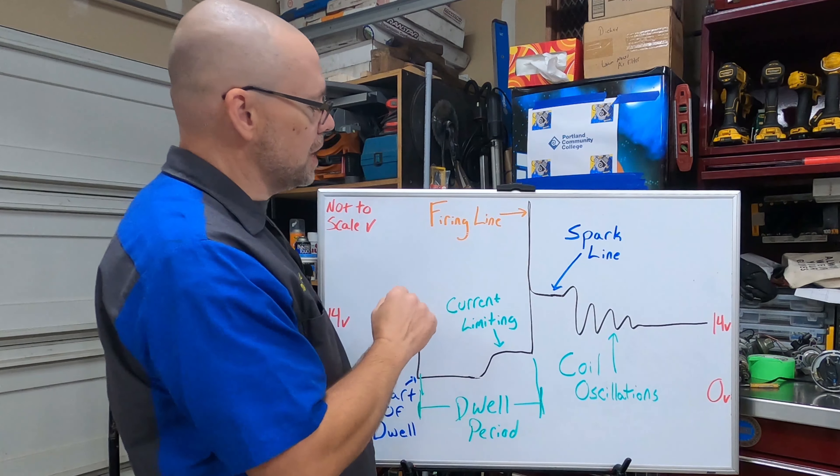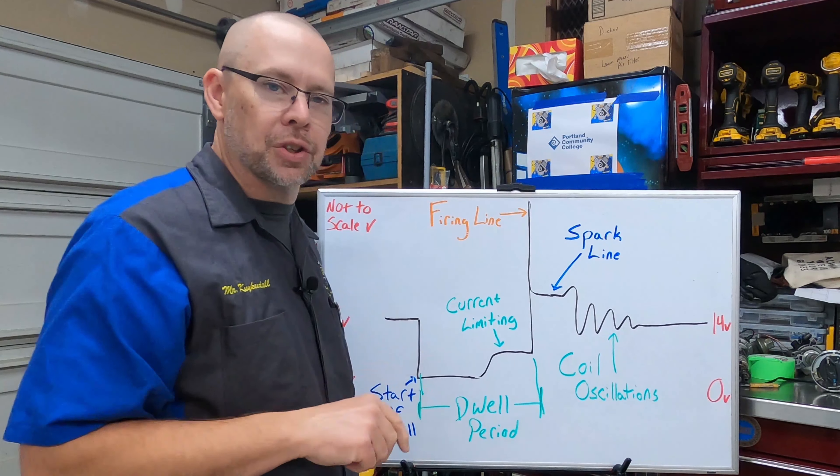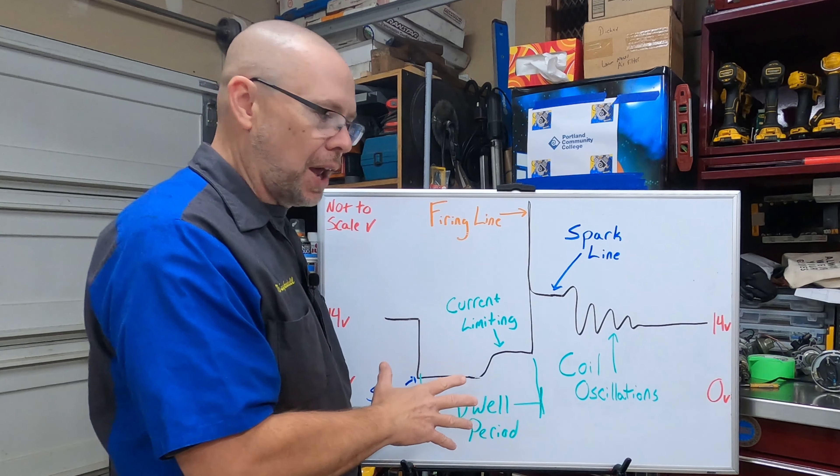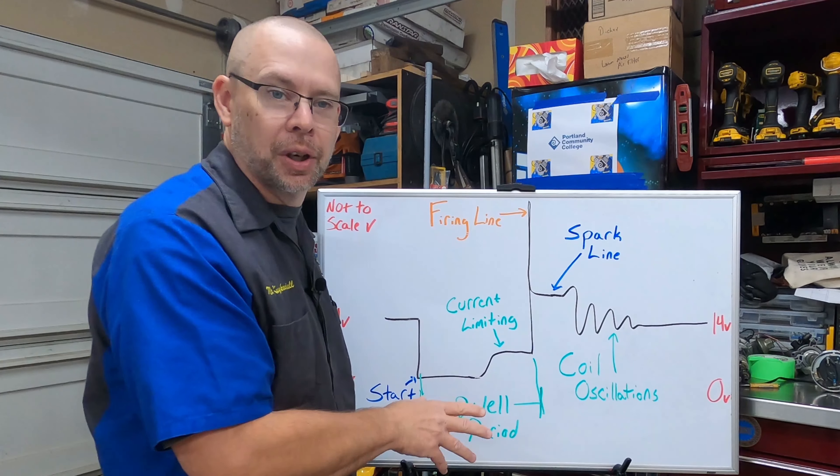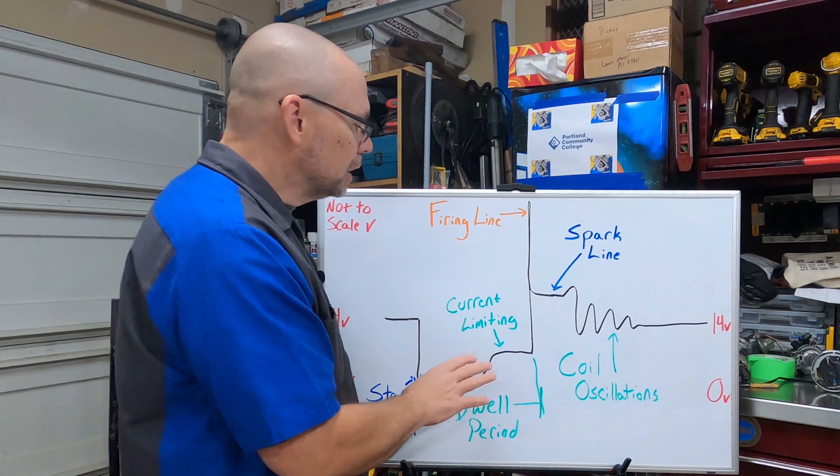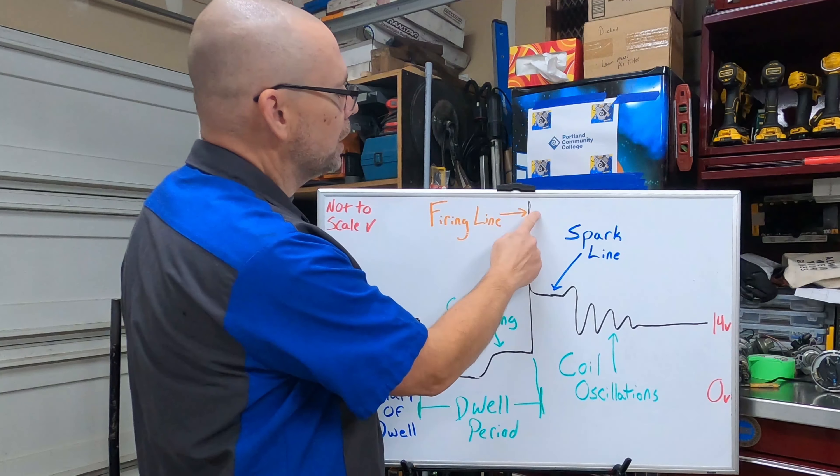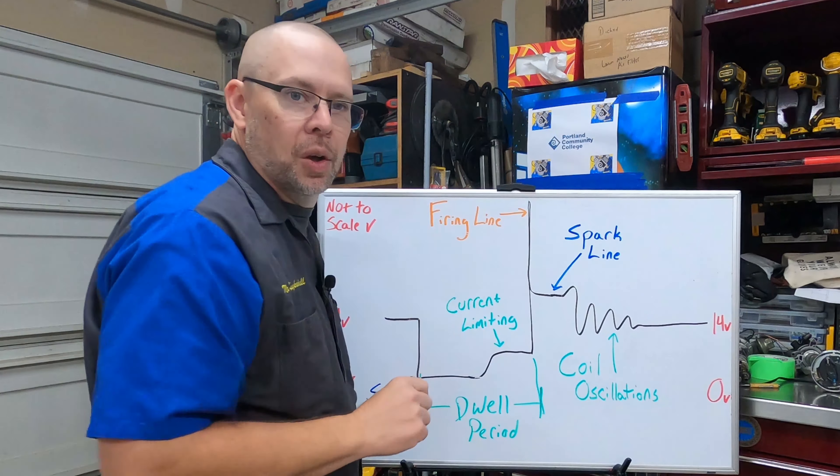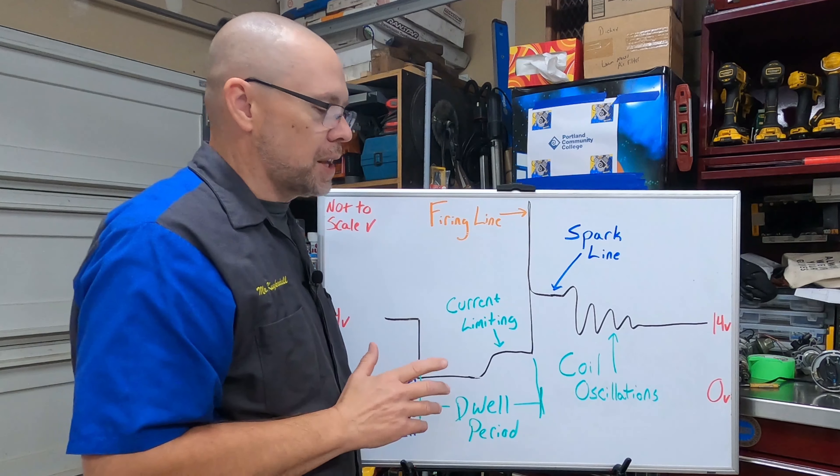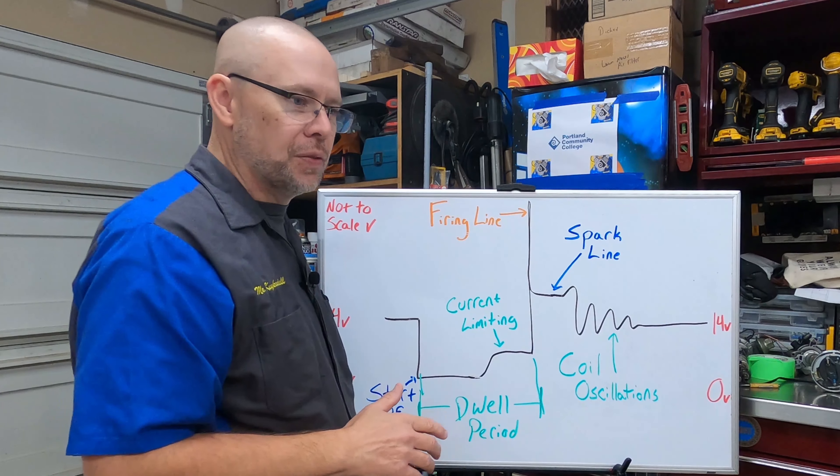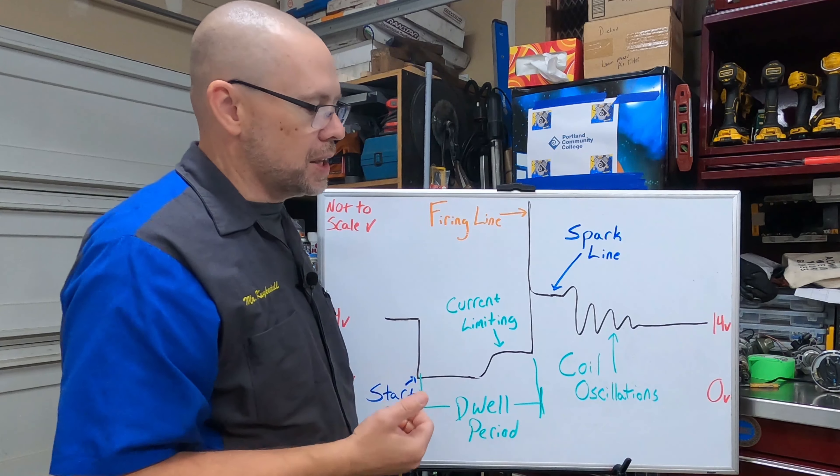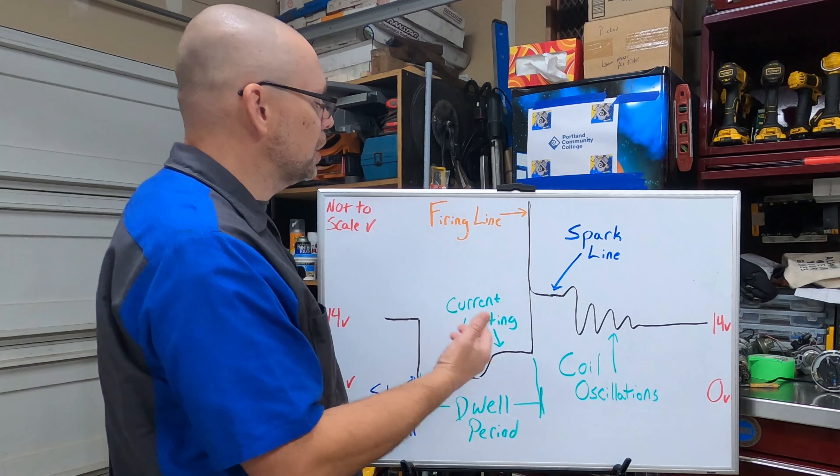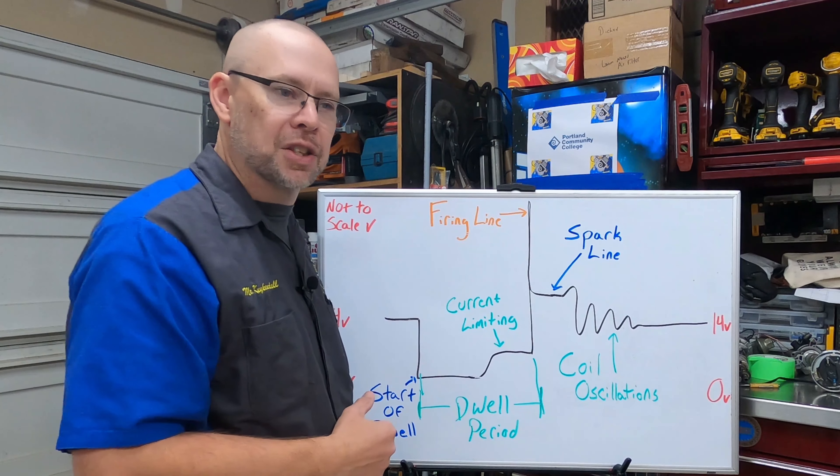A couple quick things about coils while we're here and testing them. We have two things going on. If we're looking at the secondary pattern it's mirrored of this, it looks extremely similar. We can actually tell by watching the firing line what the required voltage of our circuit is. Required voltage is how much it takes to jump all of the gaps and ionize across the spark plug gap.